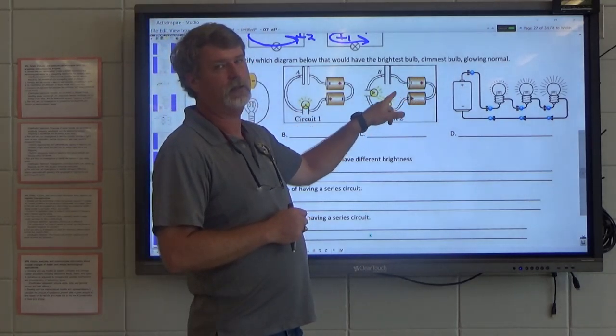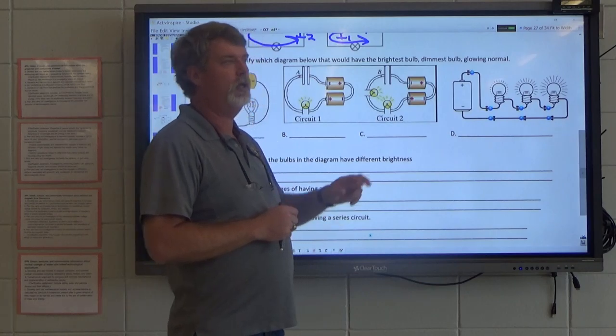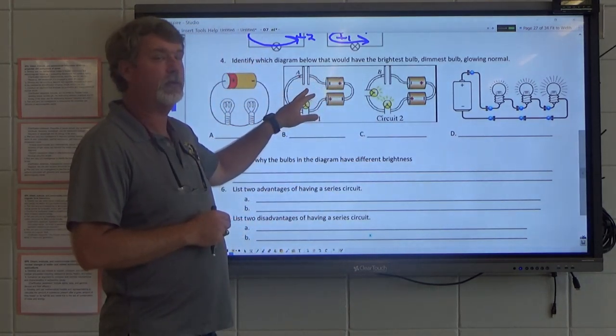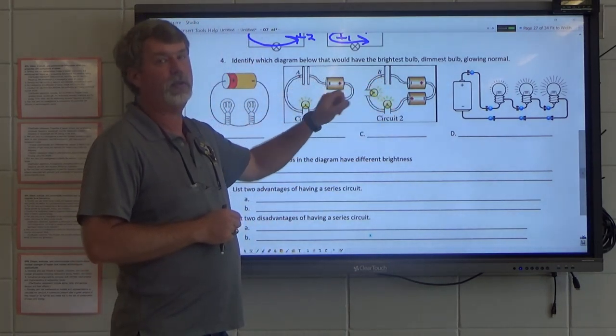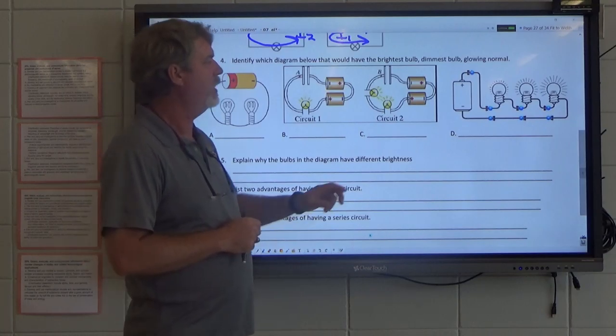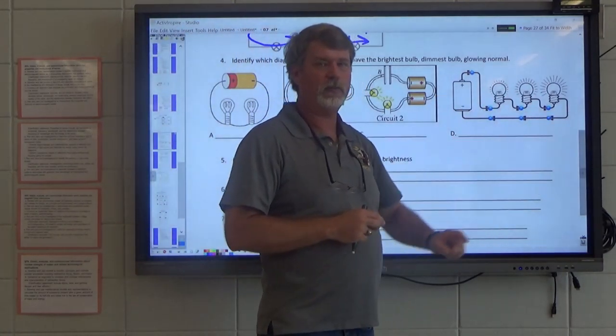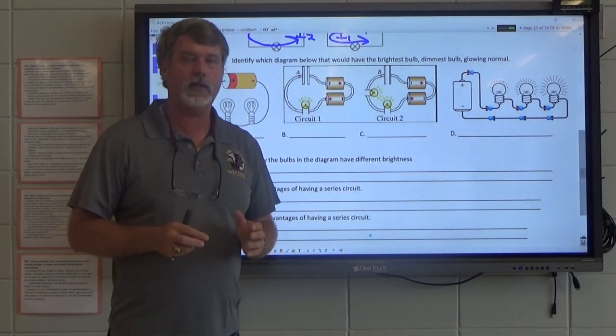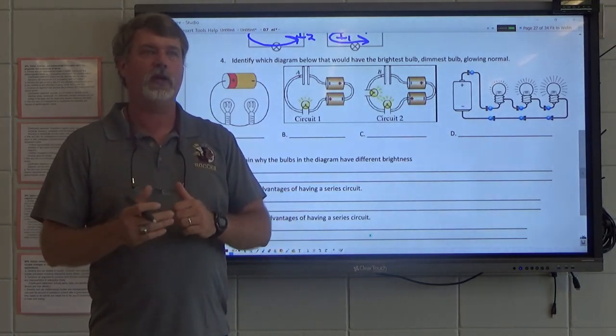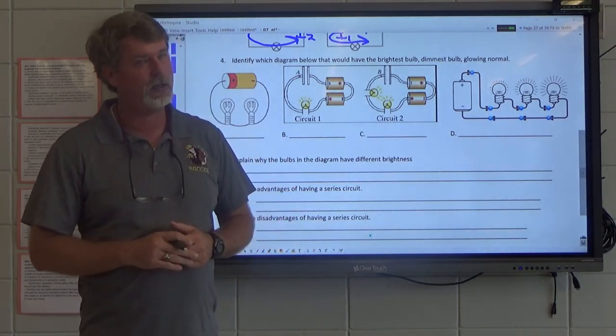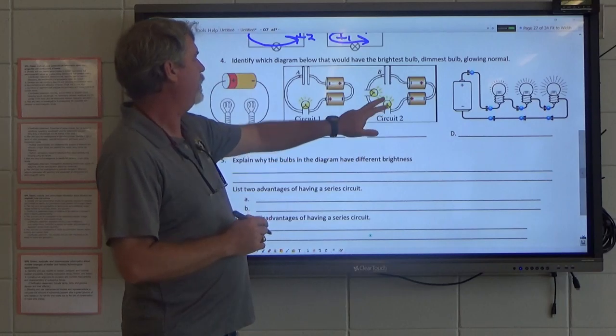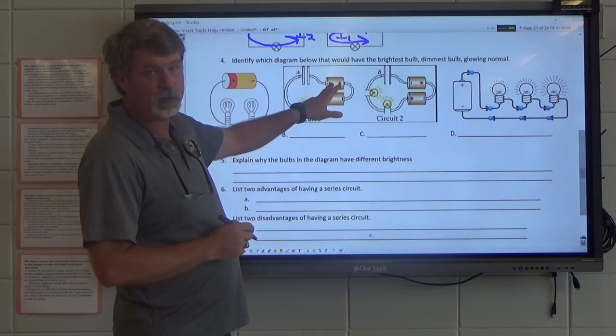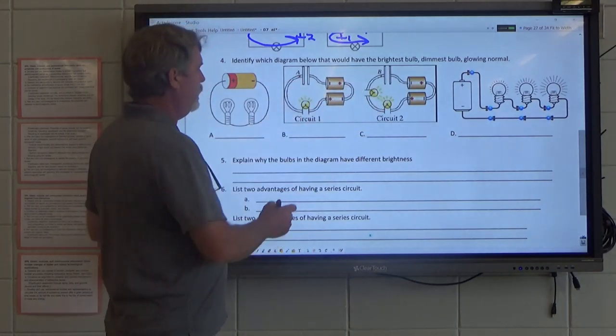Two batteries, one light bulb is going to be brighter than two batteries, two light bulbs. One battery, three light bulbs. If we're looking at the amount of voltage versus current, the higher the current, the brighter the bulb is going to be. So we've got two batteries, one light bulb, brightest.